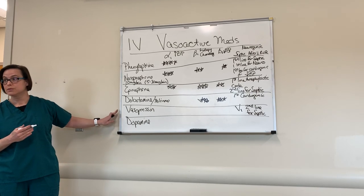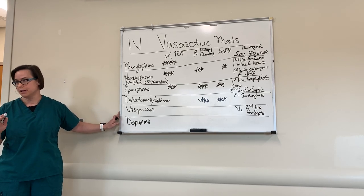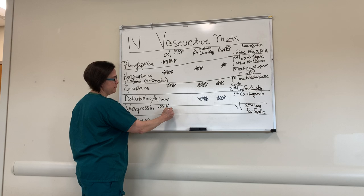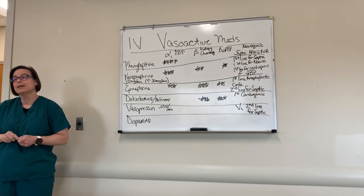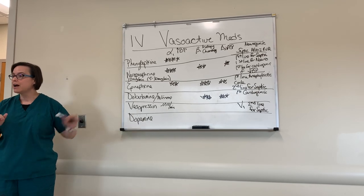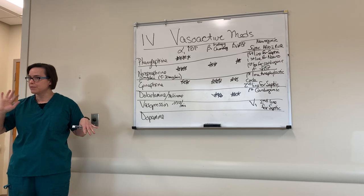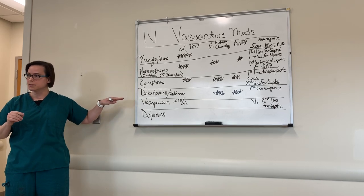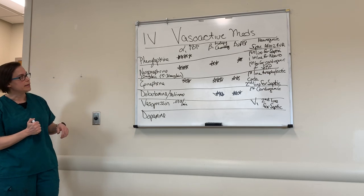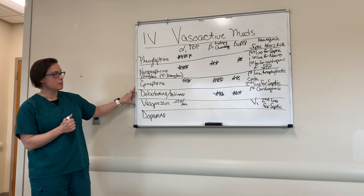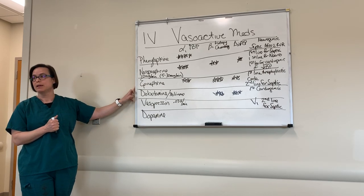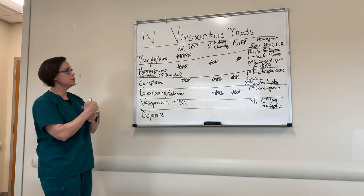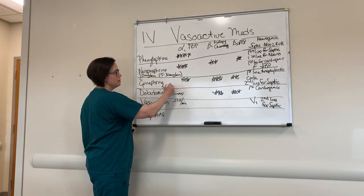Once we reach 15 micrograms per minute of norepinephrine, we add vasopressin. Vasopressin dosing is different from all the other medications: the dose is 0.03 units per minute and we don't titrate it — I think of it as hormone replacement. We put it on and let it run, then stop it later as needed. Alternatively, some clinicians add epinephrine at that point instead, which is also reasonable. Epinephrine dosing for septic shock is similarly about 5 to 30 micrograms per minute.